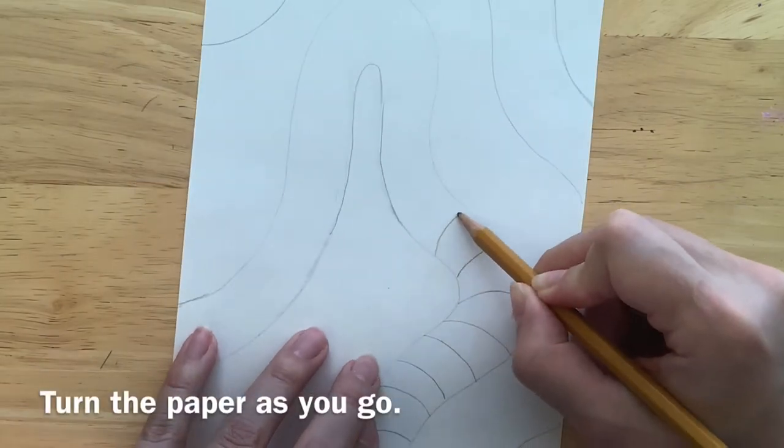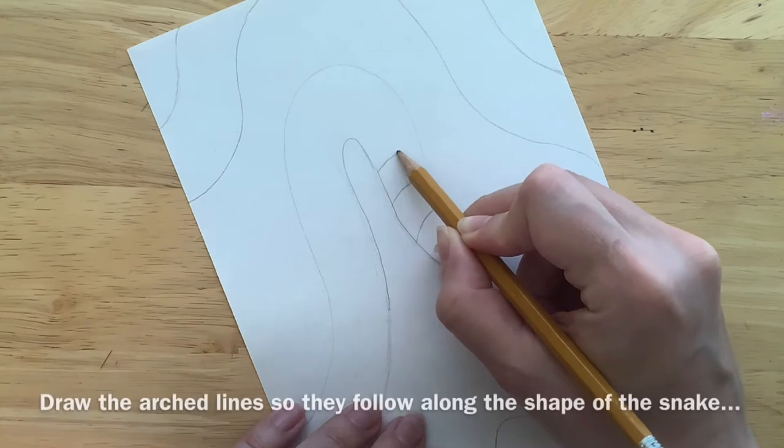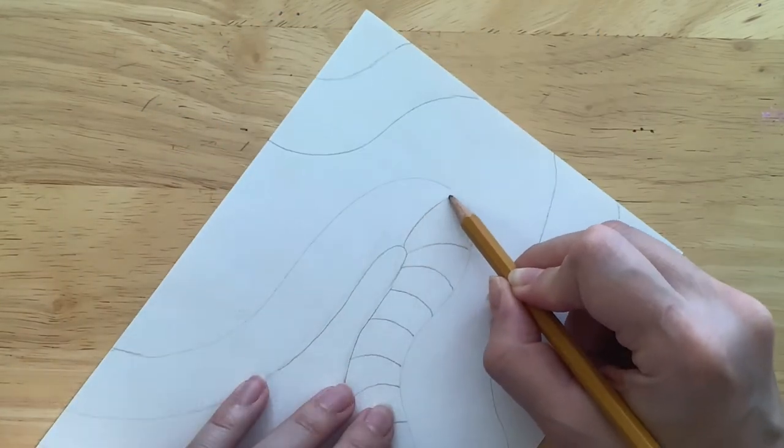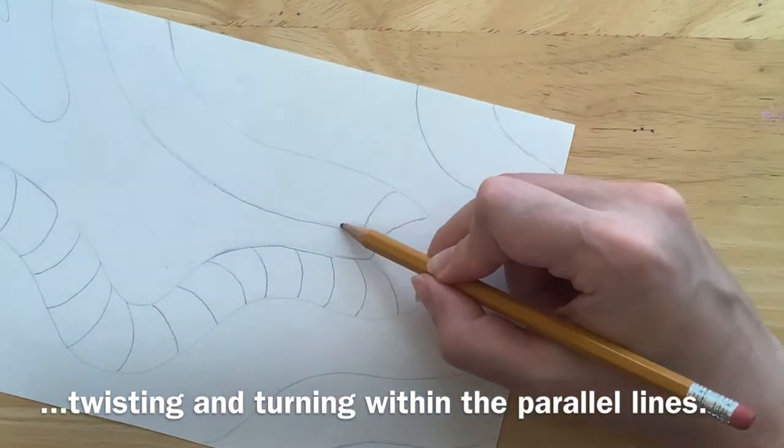Turn the paper as you go. Lightly draw the arched lines so they follow along the shape of the snake, twisting and turning within the parallel lines.